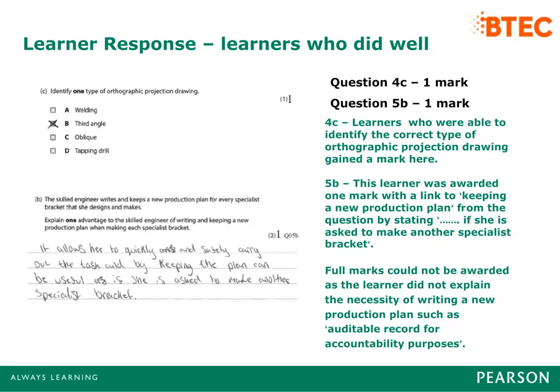The majority of learners scored well on Question 4C as they were able to identify the correct type of orthographic projection drawing as third angle. Some learners chose oblique, and although that is a type of drawing, it is not an orthographic projection and therefore incorrect. Question 5B proved to be a challenging question for the majority of learners, as they focused on why production plans are required rather than on the necessity to write and keep new production plans for each specialist component. One learner was awarded one mark with a link to keeping a new production plan, by stating 'if she is asked to make another specialist bracket'.